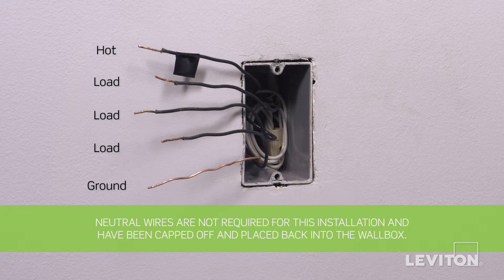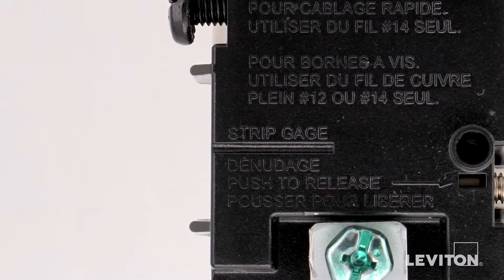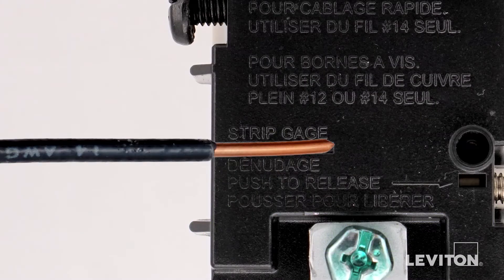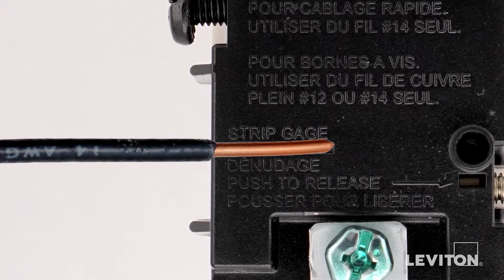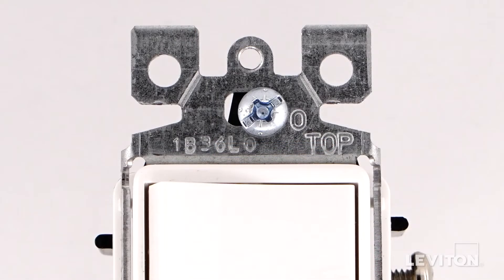Next, you need to be sure that the wires are prepared for installation. Start by making sure the wires are straight and stripped according to the strip gauge located on the back of the device. Before wiring, be sure the word top on the strap is facing up.